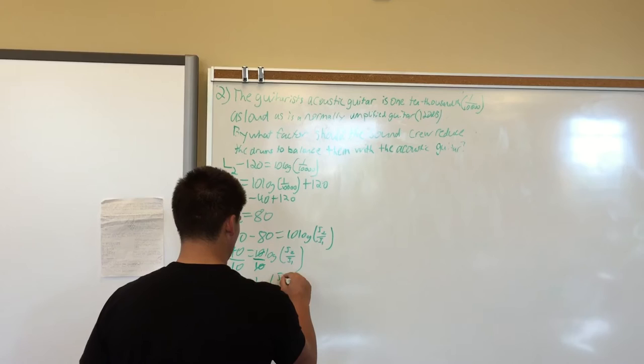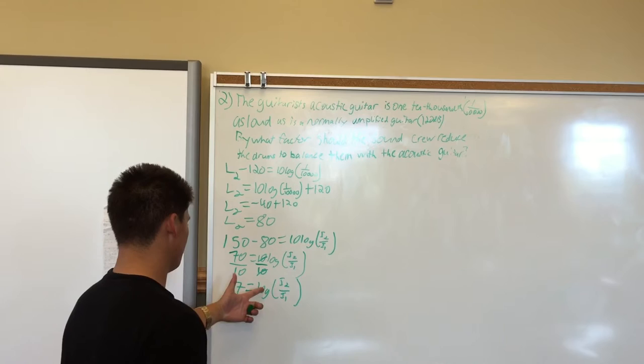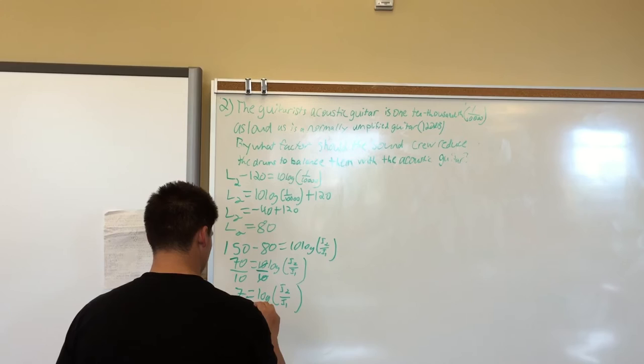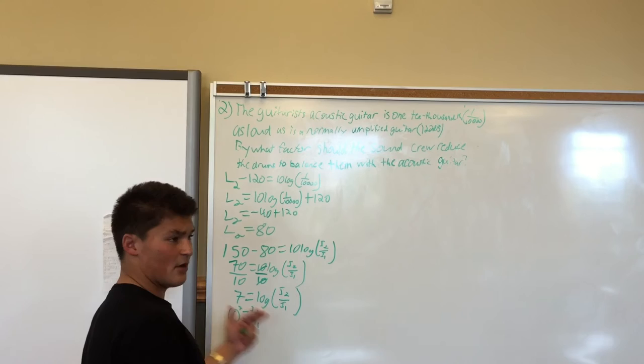That equals log I2 over I1. From there we're going to get rid of the log by using the log inverse. So we bring the log to the other side, and it becomes 10 to the power of 7 equals I2 over I1.